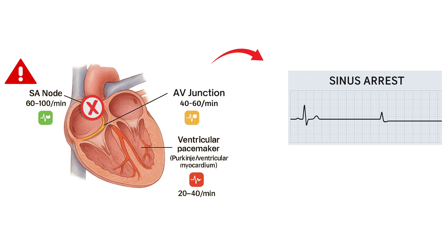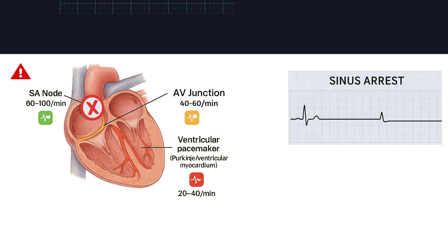Now, compare that to sinus arrest. Sinus arrest is a longer, unpredictable failure of the sinus node. There is no P wave, no electrical activity, no heartbeat. And unlike sinus pause, the timing is not a multiple of the previous rhythm. It is irregular, off schedule. And sometimes, it is followed by an escape beat.